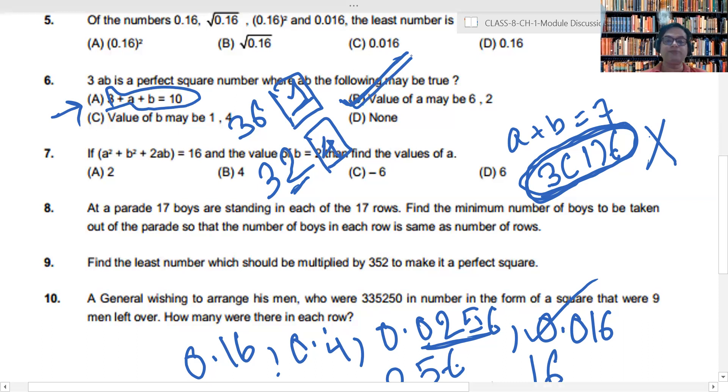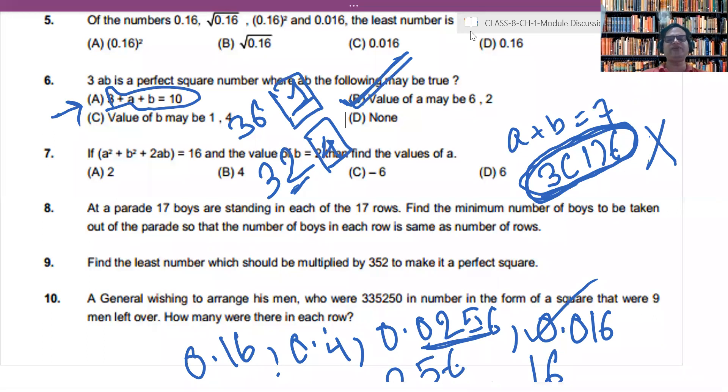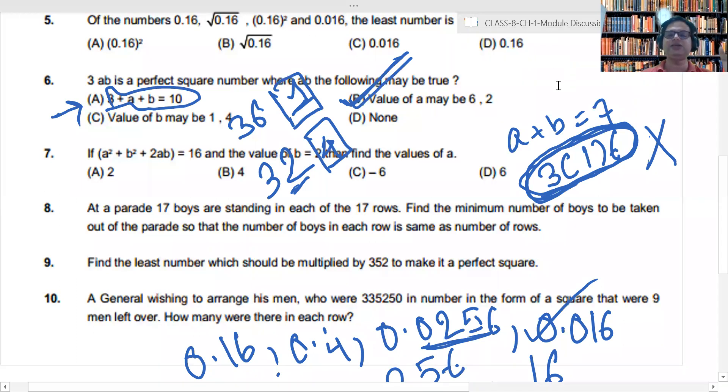But this is a multiple choice question. So I have to check with option number C also. The value of B can be 1. Yes, agar B ki value 1 hoti hai, any number ending with 1, it can be a perfect square. Hoga ya nahi hoga, that will depend upon other digits also. But yes, there is a chance that this number will be perfect square. So my dear friend, the correct answer of this question will be option number B and C.